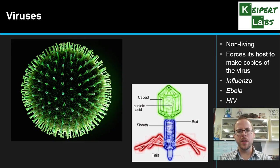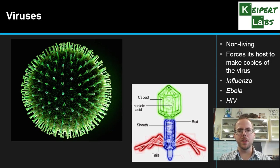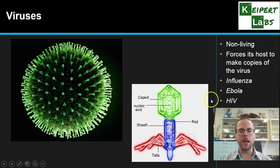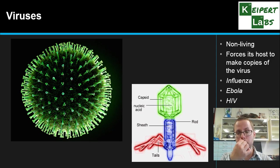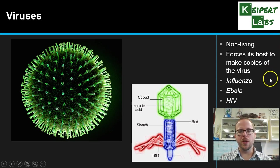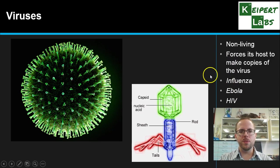We also have viruses, which are very different because in biological terms they're actually non-living. They don't have enough of their own components to survive on their own. They cannot reproduce independently — instead, they invade a host cell and force the host to make more copies of the virus, essentially turning it into a virus factory. Examples of viruses include influenza (the flu), Ebola, HIV which can cause AIDS, and measles.